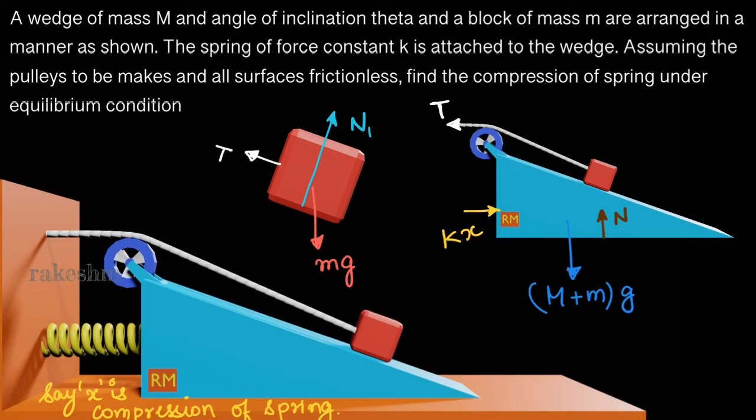Let us look at the free body diagram of the smaller block. The gravitational force on the smaller block is small m into g. The string is pulling the block in this direction with the tension T. The wedge is in contact with this smaller block, so the wedge exerts a normal reaction force on the smaller block.